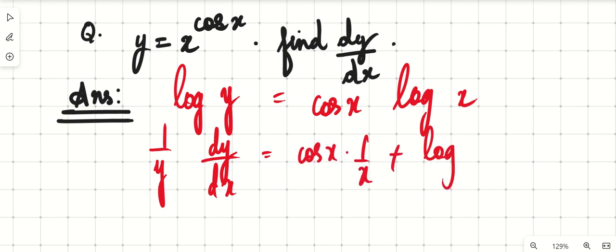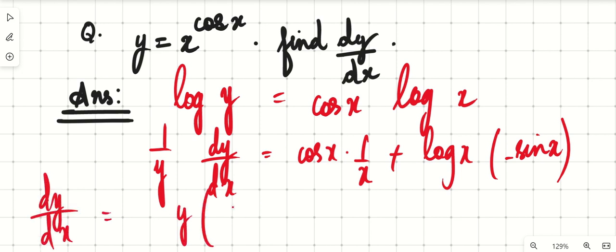log x times minus sin x. So from here, dy/dx equals y times (cos x/x minus log x sin x).